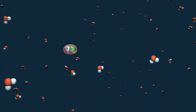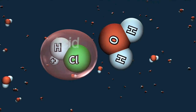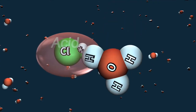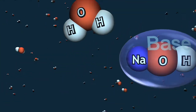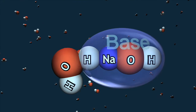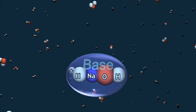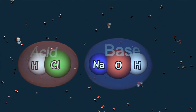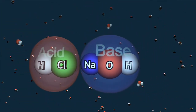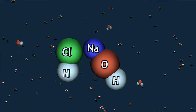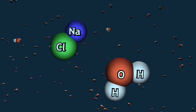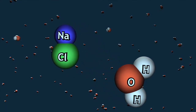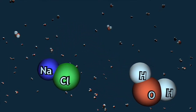Acids are compounds that like to give away or donate hydrogen atoms or protons. Bases like to accept protons. When acids and bases interact, they neutralize one another. In doing so, water and a neutral ionic compound called a salt are created as byproducts.